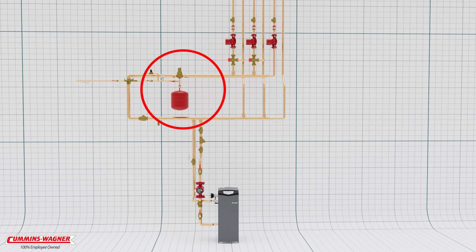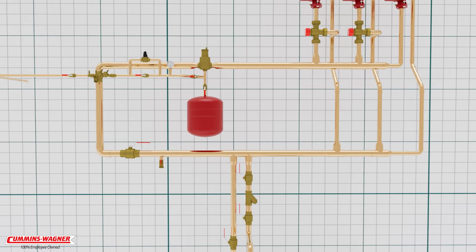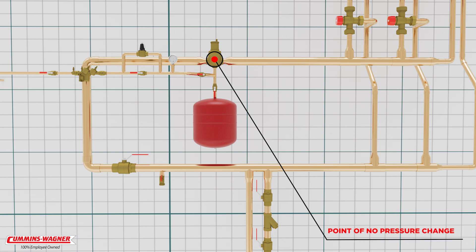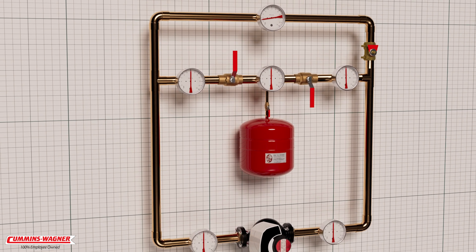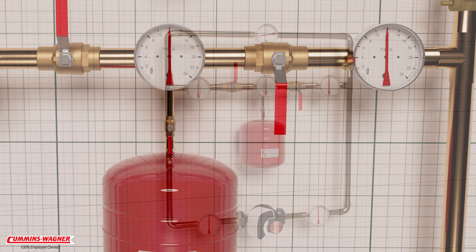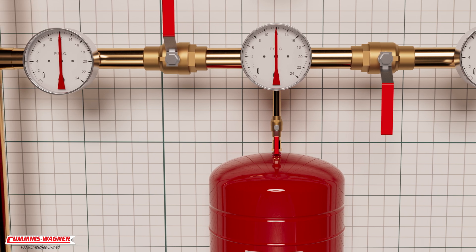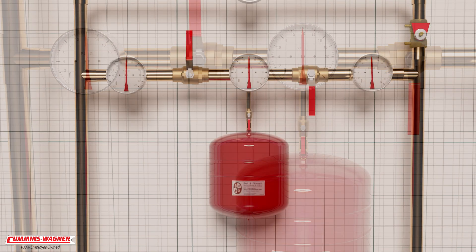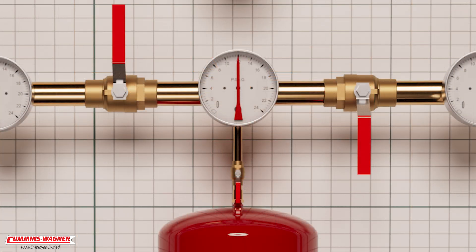The point where the expansion tank is connected to the system is known as the point of no pressure change. We've been taught for many years to pump away from this point, but why? With this model we can explore that question and hope to provide you with a better understanding of the point of no pressure change and why we always pump away from it. We start with the expansion tank isolated from the system with ball valves.